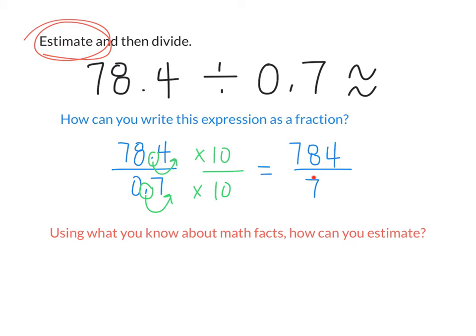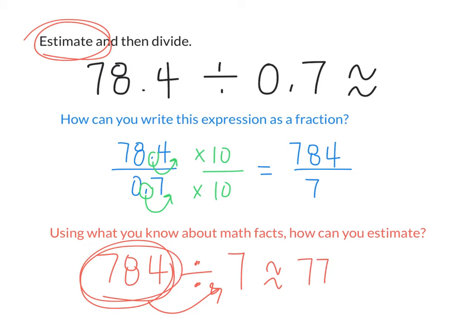Now, using what we know about math facts, let's estimate. How do I write this fraction, 784 over 7, as one division expression? Well, it would be 784 divided by what divisor? 7. When we're estimating with division, should we round the divisor or should we round the hole? The hole.